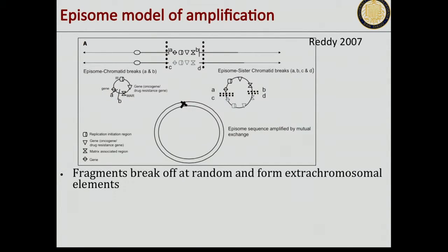In this model, fragments break off at random to form extrachromosomal elements, and through recombination events, and as they sometimes carry origins of replication, they can replicate and make more copies. This is random.